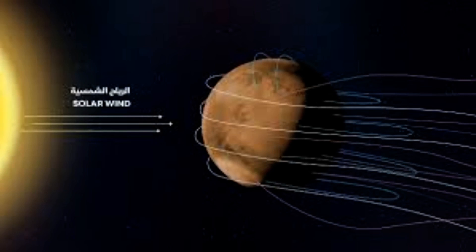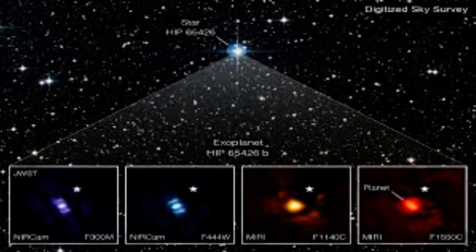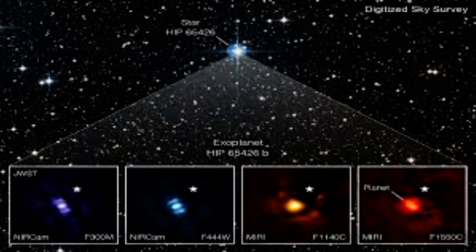The spectral signatures, including deep valleys known as absorption features, of water, carbon dioxide, and carbon monoxide are easily detected with Webb.